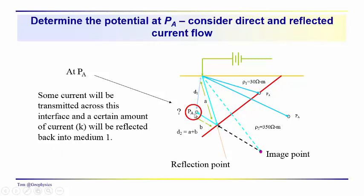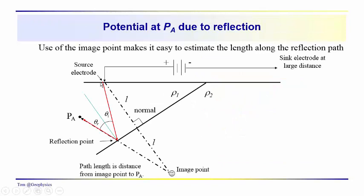So we're going to start by looking at the potential of point A associated with the direct and reflected current flow. In order to do this, we take advantage of the image point. But the key ideas are that we know that when the current strikes this interface, along its entire wave front, some of it is going to go through the interface, some of it will be transmitted, and then some of it will be reflected back into medium one. So we have a fraction that's transmitted and a fraction which is reflected back into the medium. And that fraction is referred to as k, and that's also what we call our reflection coefficient.